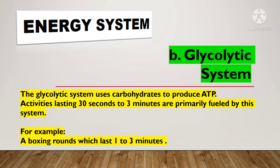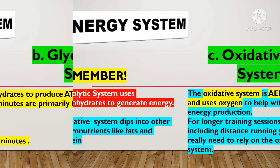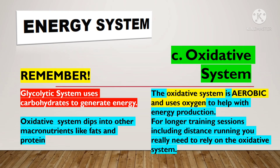Imagine a boxing round which lasts 1 to 3 minutes. Remember, if the glycolytic system uses carbohydrates to generate energy, the oxidative system dips into other macronutrients like fats and protein. The oxidative system is aerobic and uses oxygen to help with energy production. For longer training sessions, including distance running, you really need to rely on the oxidative system.